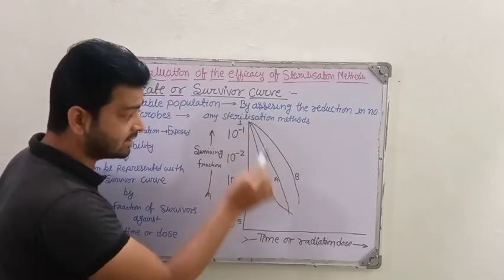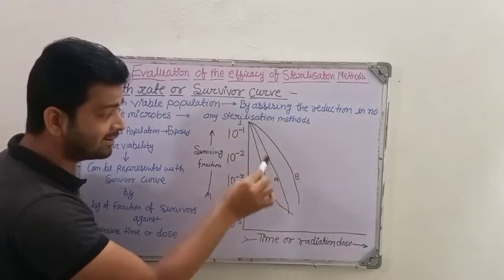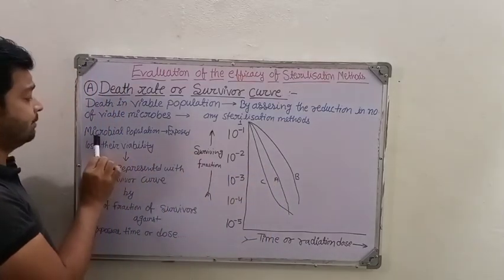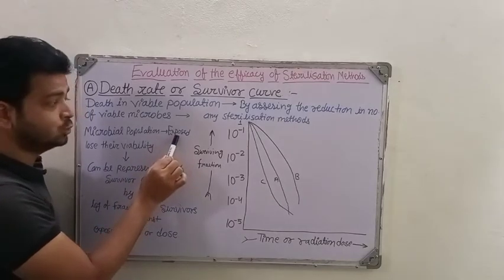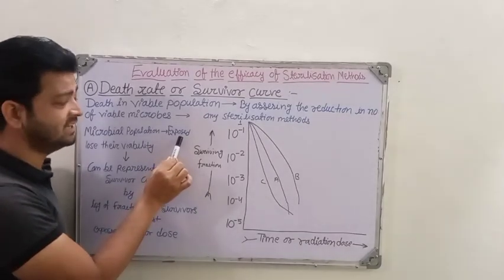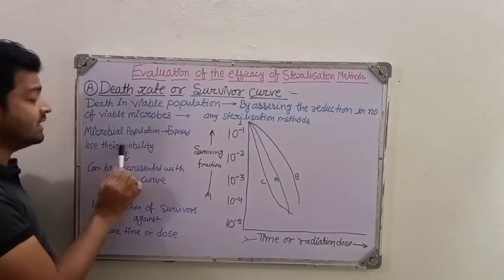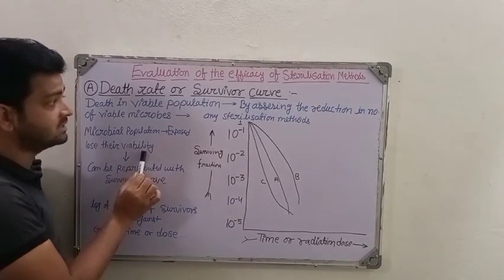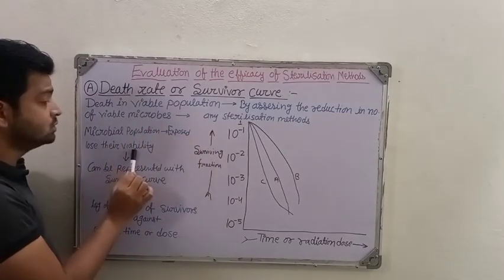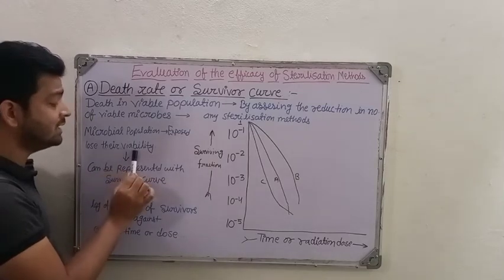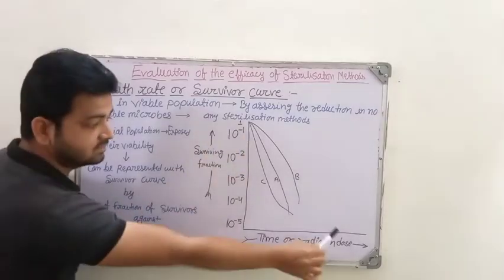What is the rate of death? How are they falling down, how are they dying, at what rate are they dying? When a microbial population is exposed to any sterilization technique - it may be radiation, it may be chemical - they lose their viability. Whatever viable cells or viable population is there, how are they losing viability? What is the rate of losing their viability? That can be represented with the survival curve.